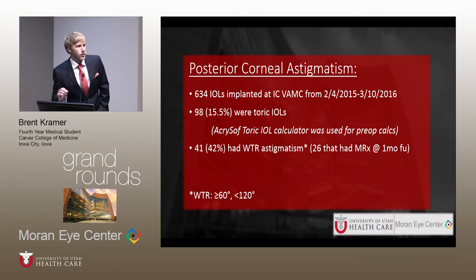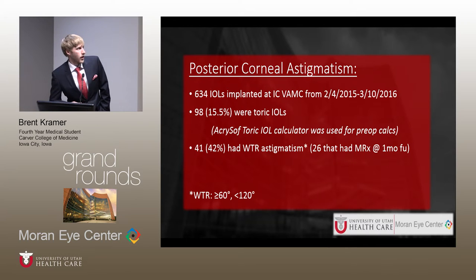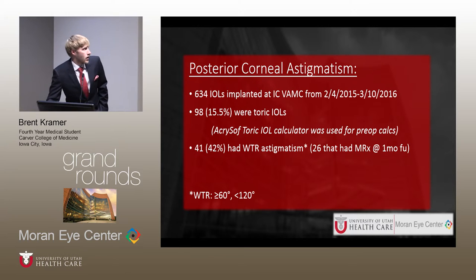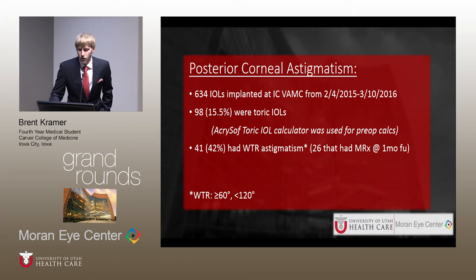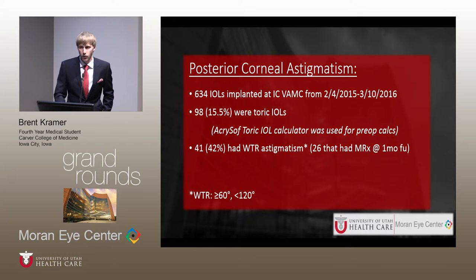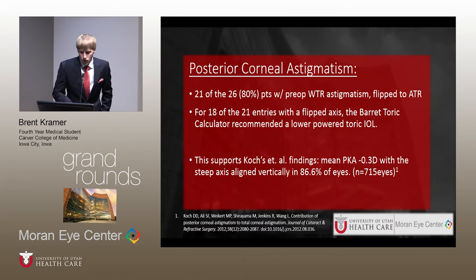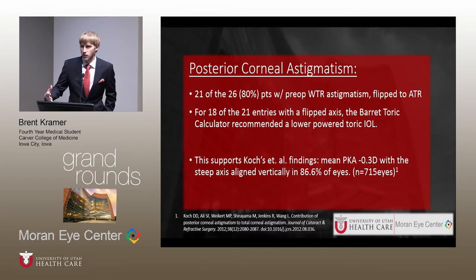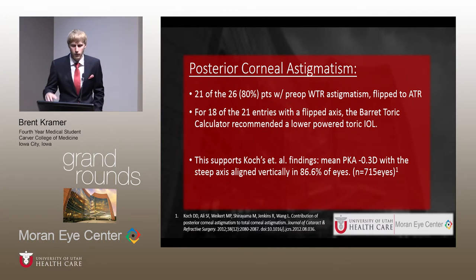At the Iowa City VA, I looked at all IOLs implanted over a 13-month span from February 2015 to March 2016. We implanted 634 IOLs, 98 of which were toric — about a 15.5% rate. During this time we were using the Acrosoft toric IOL calculator. Of the 41 patients with with-the-rule astigmatism, 26 had a manual refraction at one-month follow-up. Of those 26, 21 (80%) had their with-the-rule astigmatism flip to against-the-rule astigmatism when using the Acrosoft toric IOL calculator.